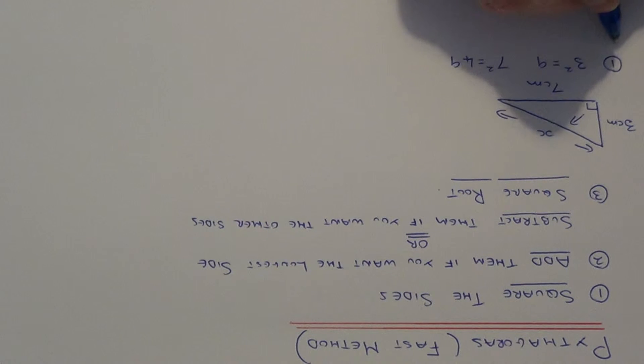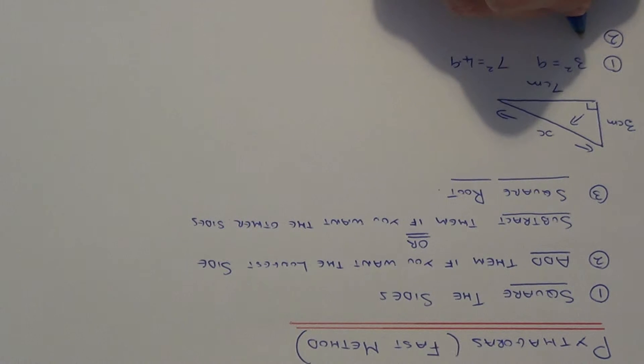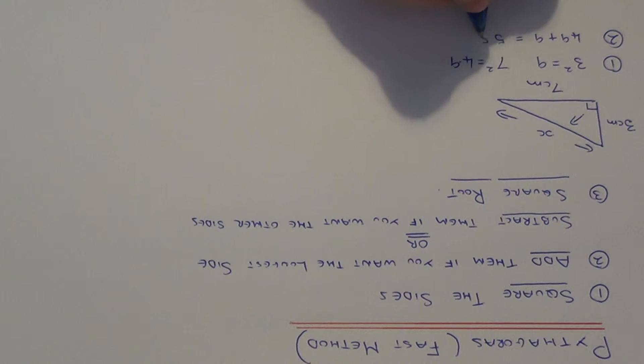The next thing you need to do, since we are doing the longest side, you need to add these two squares together. So we do forty-nine and nine which is fifty-eight.